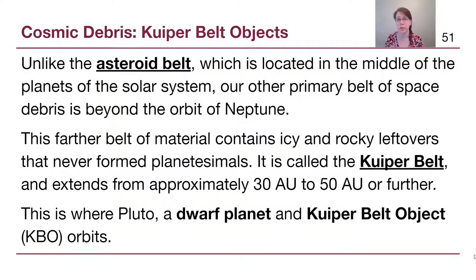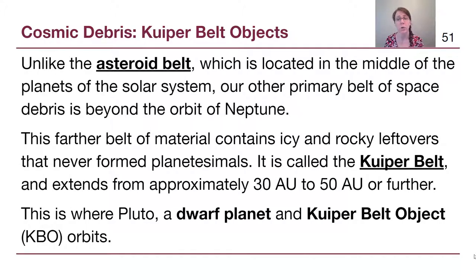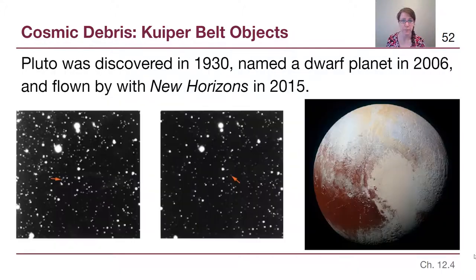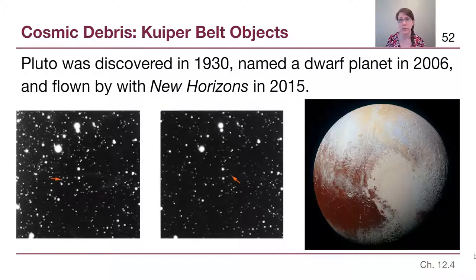As we discovered Eris, Haumea, and Makemake — the other dwarf planets mentioned in Chapter 7 — they are also Kuiper Belt objects. It's worth noting the history of Pluto briefly because it always creates a little bit of debate and discussion.